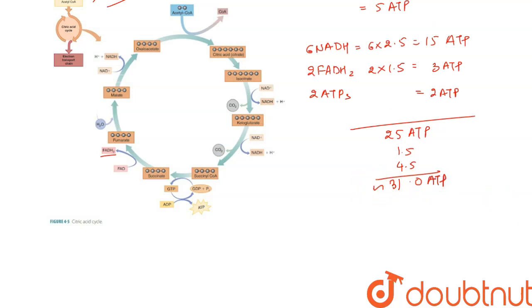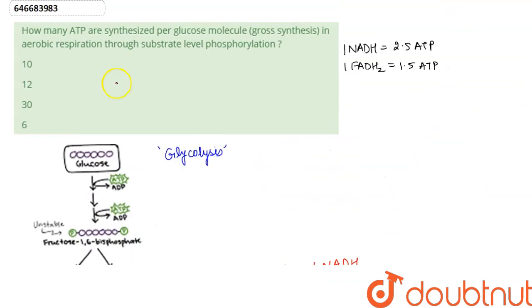Approximately. So the answer to this question, how many ATP are synthesized per glucose molecule in aerobic respiration, will be 30. Option C.